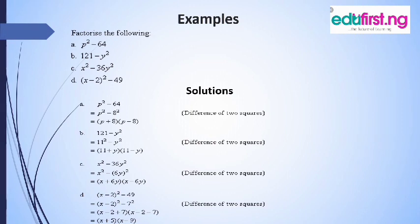Example D: x minus 2, everything squared, minus 49. 49 is a perfect square — 7 times 7 gives 49. So we can write this as x minus 2, everything squared, minus 7 squared. We know we can use the concept of difference of two squares. So that will be x minus 2 plus 7, bracket x minus 2 minus 7. Doing the arithmetic: that gives us x plus 5, bracket x minus 9.